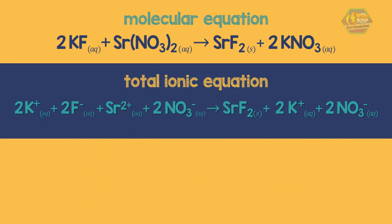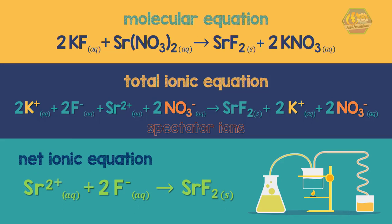Now, writing the net ionic equation. We noticed that the potassium and nitrate appear on both sides of the equation. So, they are the spectator ions. Finally, we have our net ionic equation and our spectator ions which are potassium and nitrate.